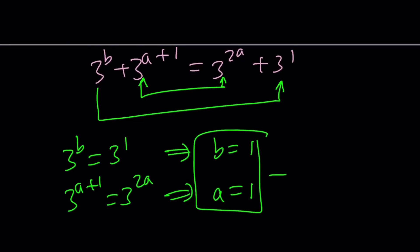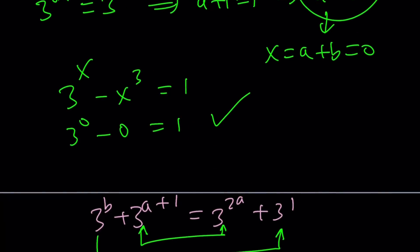Both of these gives us solutions right away. b equals 1 and a equals 1. Great. But x equals a plus b. So, from here, x equals 2. x equals 0 and x equals 2.